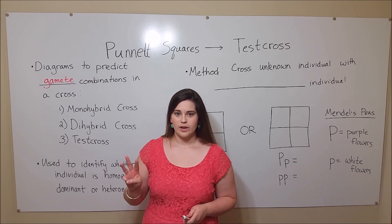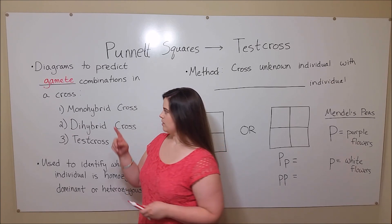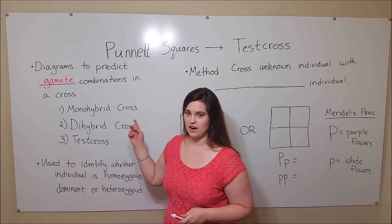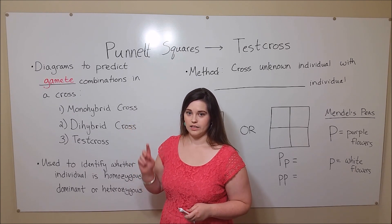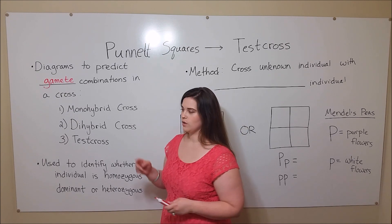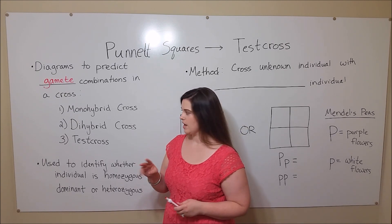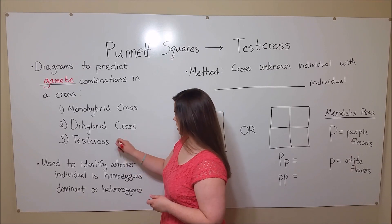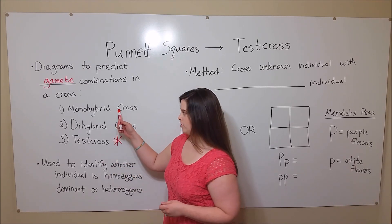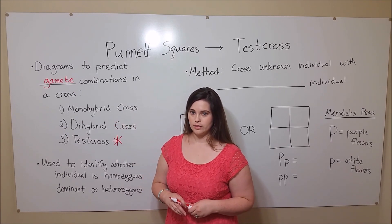There are three situations where Punnett squares are helpful. These are the monohybrid cross, where they're used to track the inheritance of alleles for one gene; the dihybrid cross, used to track the alleles for two genes; and then the test cross, which we're talking about today. If you're interested in learning more about the monohybrid cross and the dihybrid cross, see my other videos on those topics.